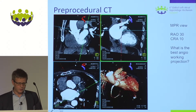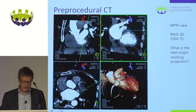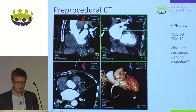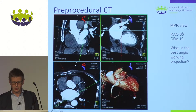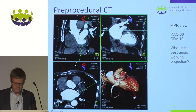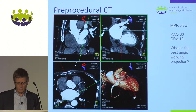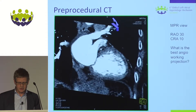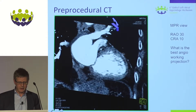In multi-planar reconstruction you can see the AP view, tilt it cranially, or tilt it in RAO. You can obtain what you would see in an RAO 30-degree, 10-degree cranial fluoroscopy projection, and you can definitely choose the most optimal working projection for your procedure. We very often use 30-degree RAO 10 cranial, which gives you all the anatomical markers — the ridge, the upper pulmonary vein, the circumflex, and so forth.